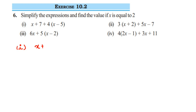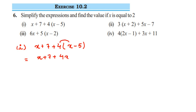So the first expression is x plus 7 plus 4 into (x minus 5). Open the brackets. So it is x plus 7 plus 4 into x, which becomes 4x, and there is a minus sign, so put minus. And 4 into 5 is 20.